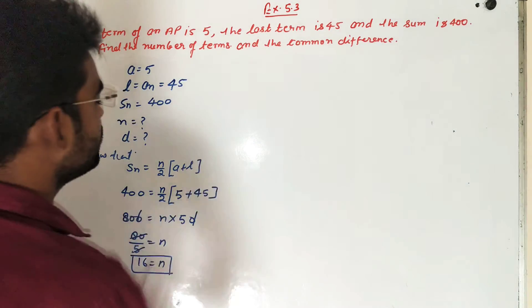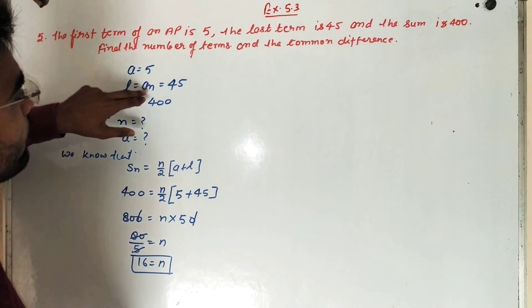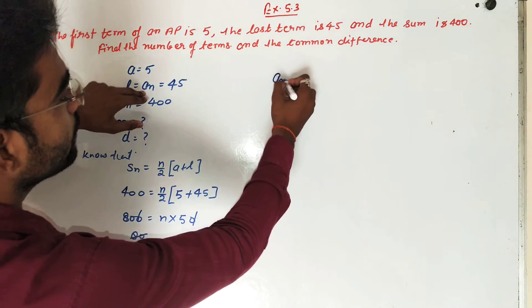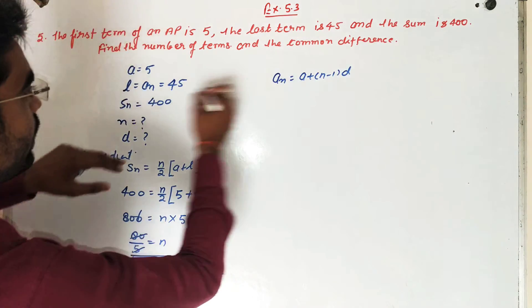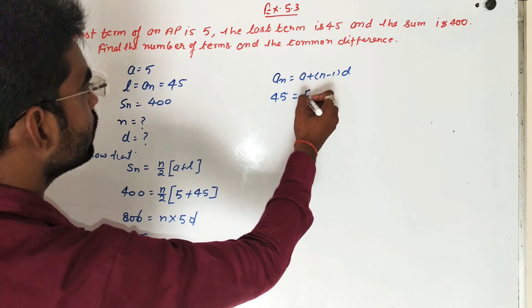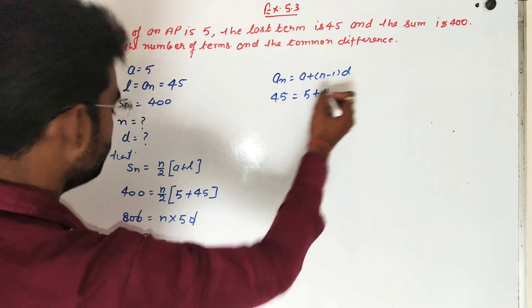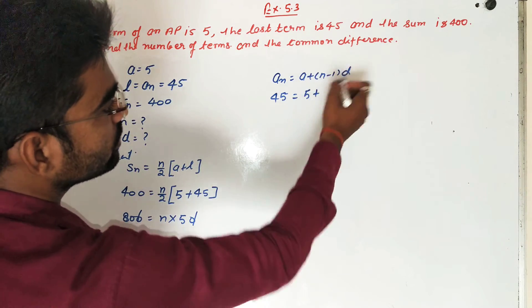And the common difference, for common difference, first we have to use the formula AN. AN is equal to A plus N minus 1 into D. And AN is equal to 45.